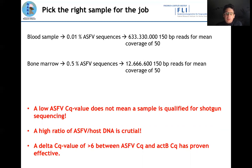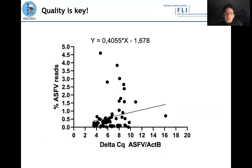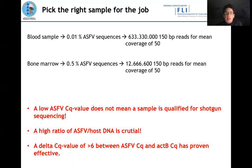What we usually find is that when we have a delta Cq value of around 6 between the ASF Cq value and the beta-actin Cq value, we usually have a good and suitable sample for shotgun sequencing. Looking at the graph — this is not a systematic experiment but data from whole genome sequences we did in the last months — the percentage of ASF reads in the sample increases with the delta Cq of ASF to beta-actin. In the end, you have to pick the right sample; quality is the key.